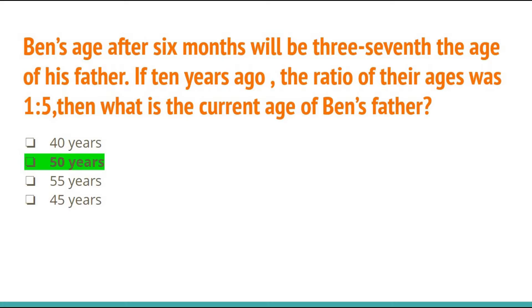Ben's age after 6 months will be 3/7th the age of his father. If 10 years ago the ratio of their ages was 1:5, what is the current age of Ben's father? Take Ben's age as X and Ben's father's age as Y, put all the conditions into equations and solve. The answer is option B, 50 years.